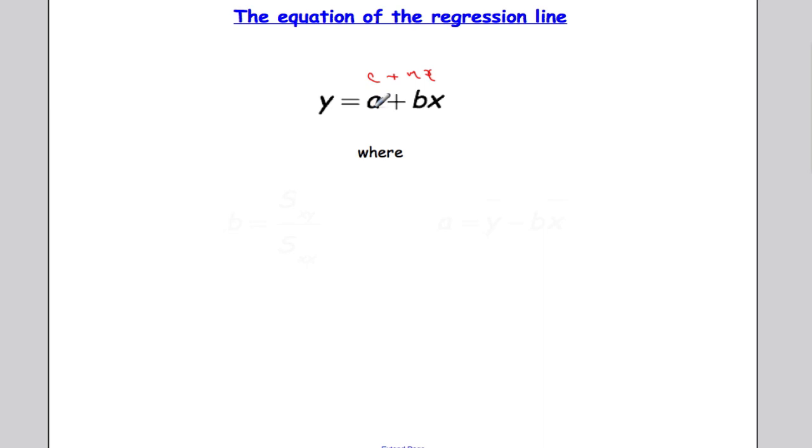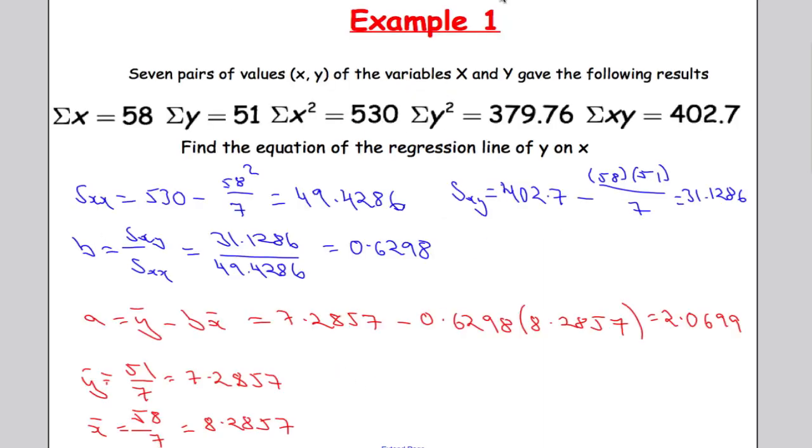And if you remember it's given as y equals a plus b times x. So y equals a which is 2.0099 plus b which is 0.6298 times by x. And that is our regression line.